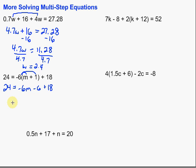Then we need to combine like terms. So we have 24 equals negative 6m, and then we have minus 6 plus 18. Combining those gives us 12.